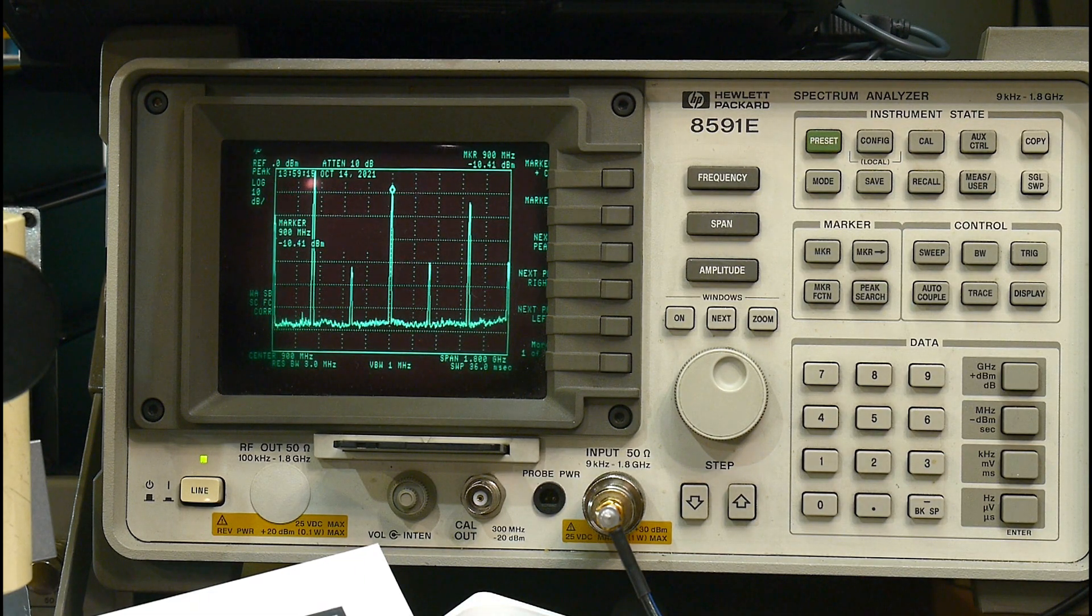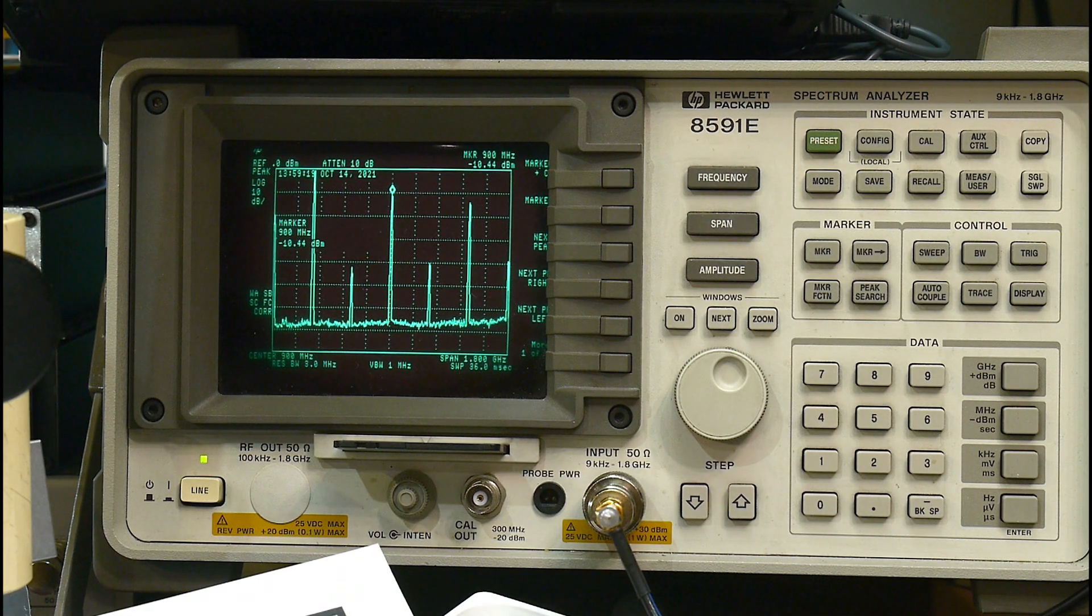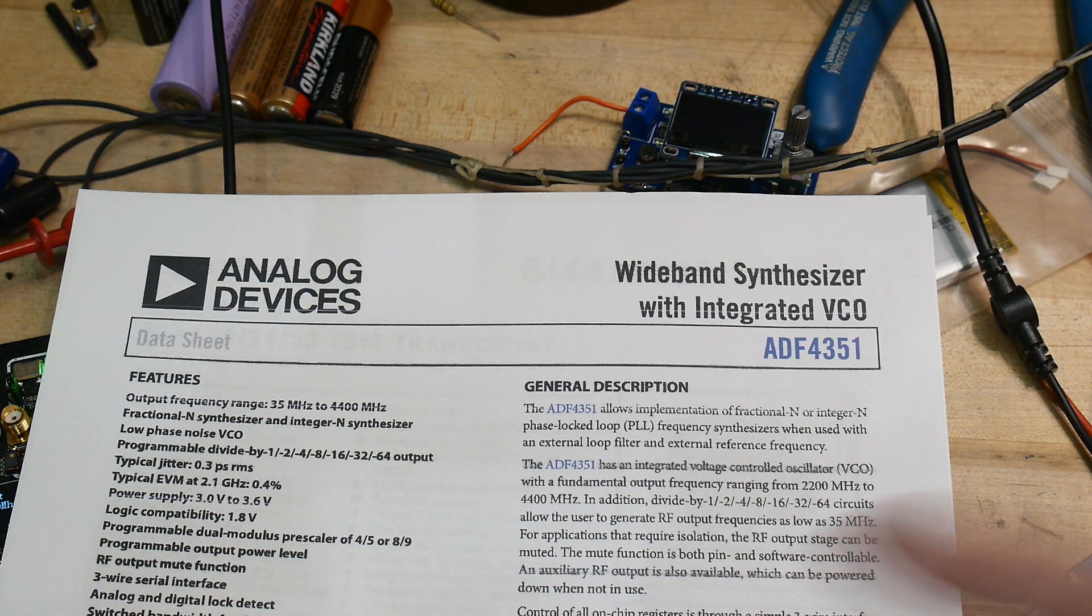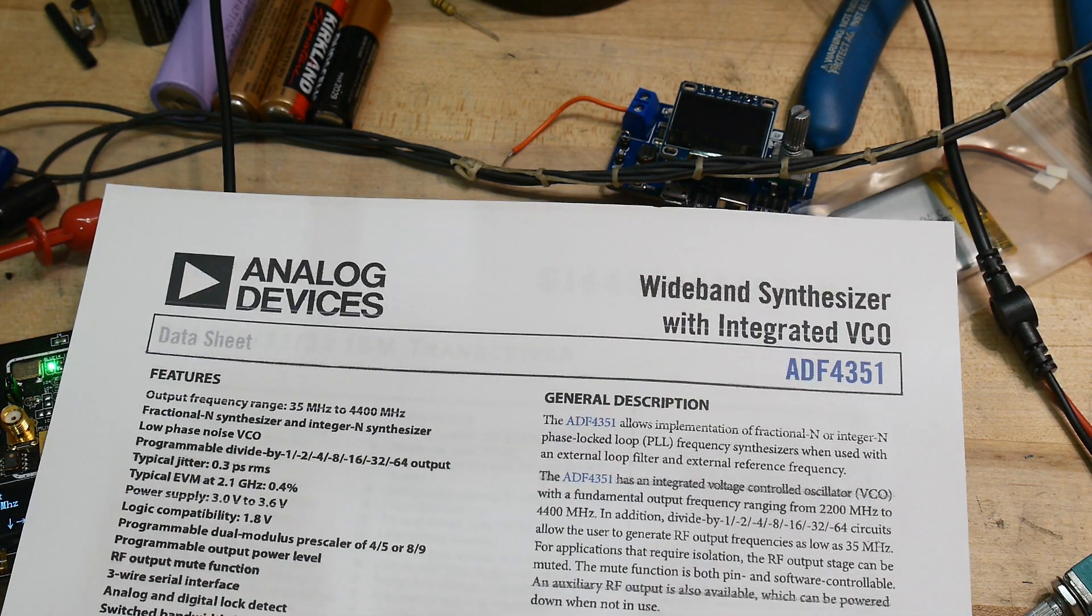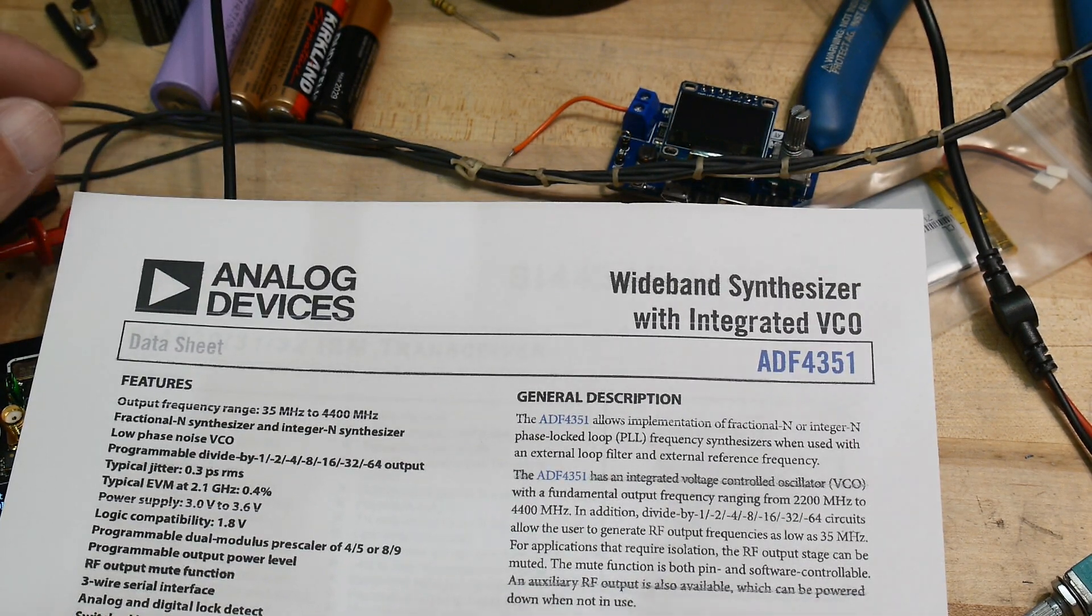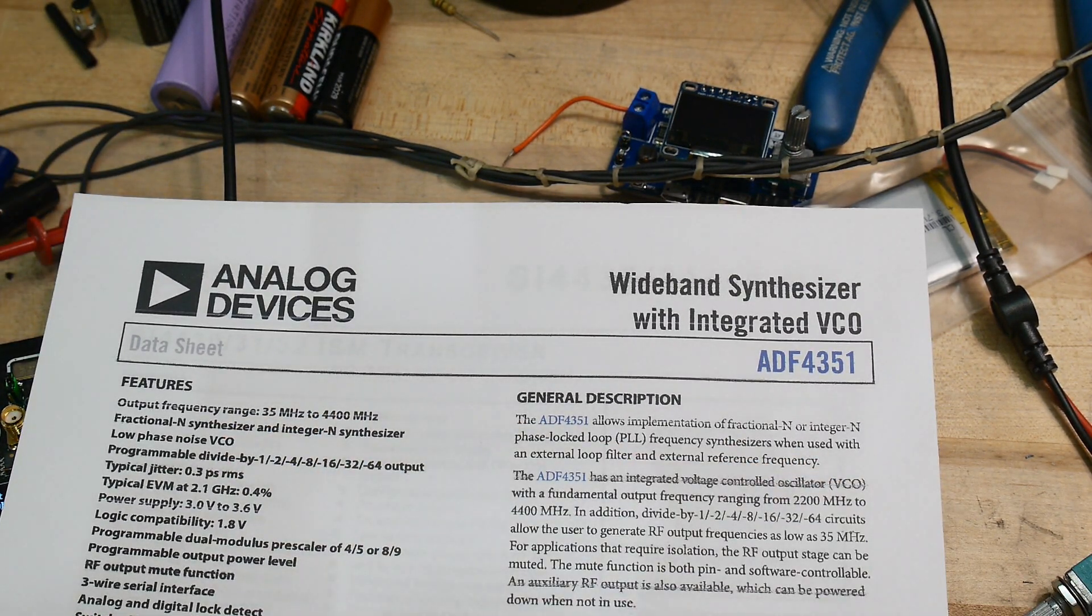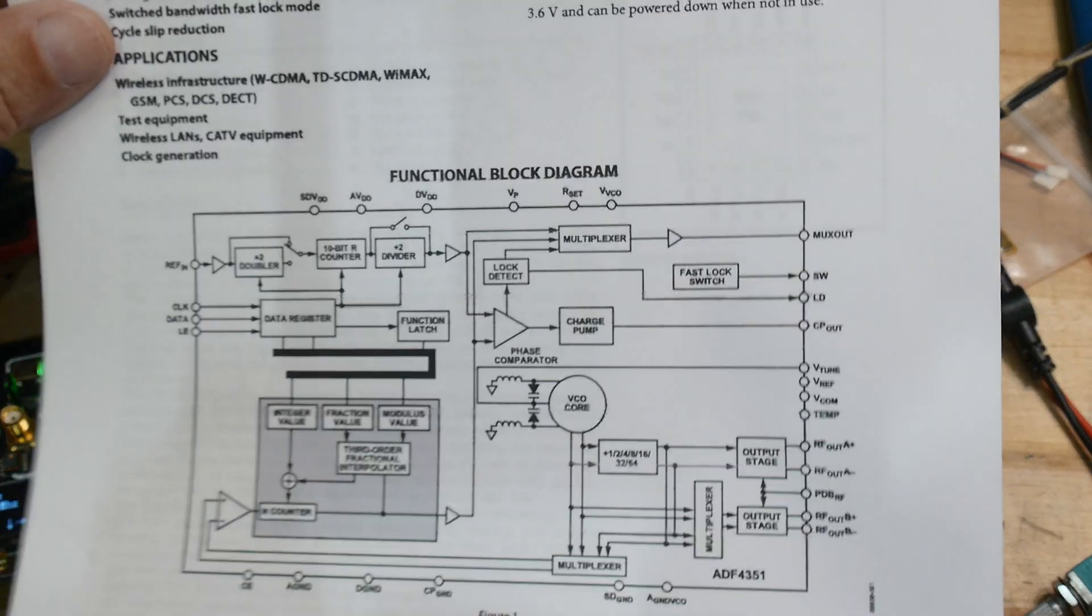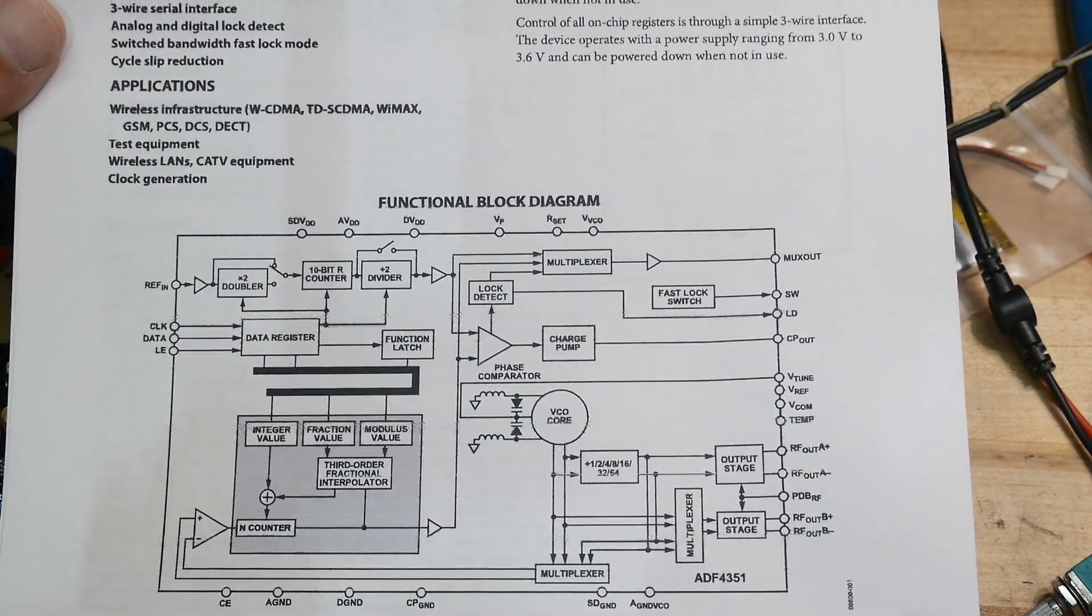Let's take a look at another instrument. Before we go there, this is the chip that's being used on this little board here. It's an ADF4351, 35 megahertz to 4.5 gigahertz. It's a fractional N and integer N synthesizer. It has a VCO, has lots of programmable stuff. It's a very interesting chip. It's very, very flexible in what it can output. So it's a nice chip.